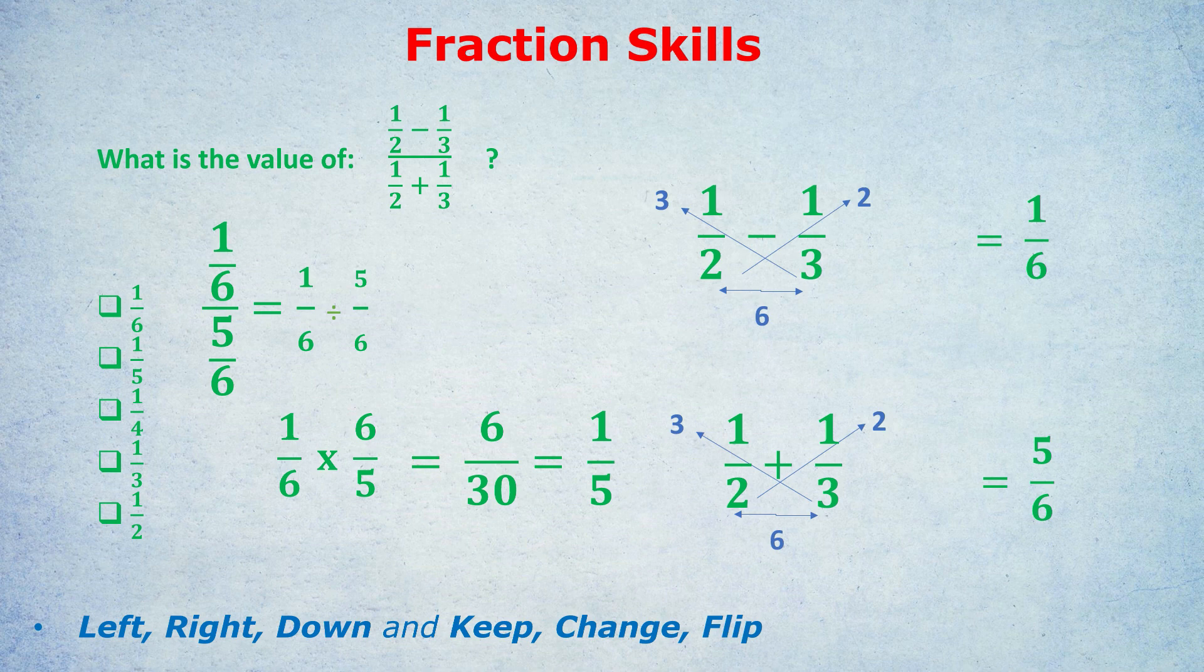And the second confusion you might have is, why didn't we use the left right down method? Because we're multiplying. Multiplying is very different to adding and subtracting fractions. Look to the right of the screen, and you'll see how we add and subtract fractions, but that's not how we multiply. Multiplying is much more simple. You just multiply the numerators, and multiply the denominators. Don't worry though, we're going to practice this in the next question.